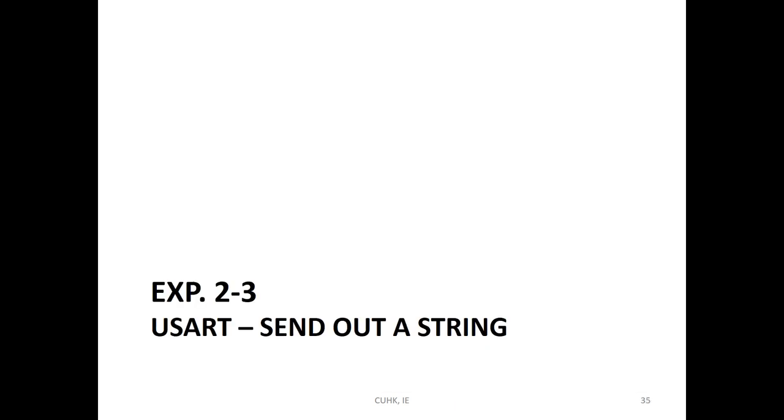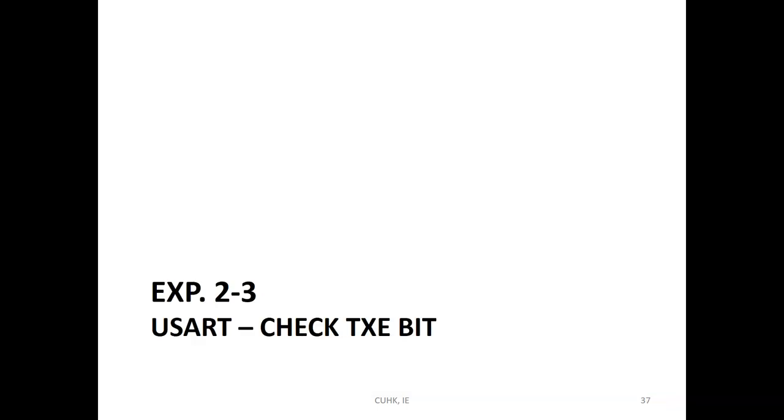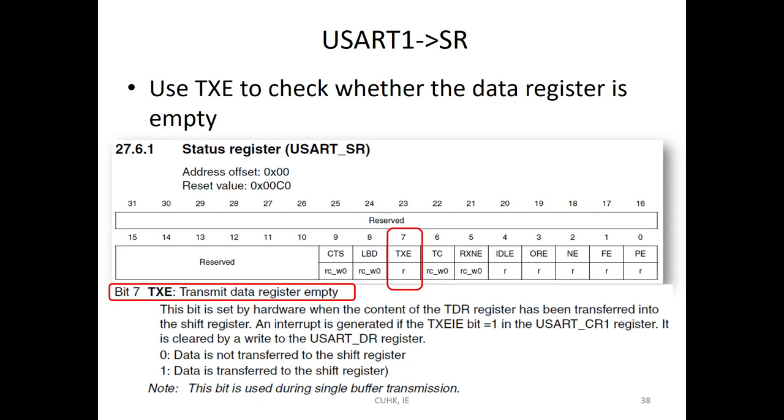And how to send out a string, experiment 2.3, then send the string. When you want to send the string, 1, 2, 3, 4, 5, actually 5 character, actually we will send 6 register. The last one is 0. 0 is normally, this is null. So, means that end of the string. Then check the TXE bit. Now, the data register, then here are some bits for TXE. Means that when this bit, when the data register is empty, then this bit will set. So, check this register, TXE, then you can know the transmit is complete or not. If complete, you can send another character.